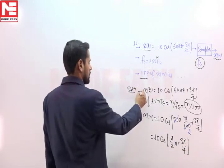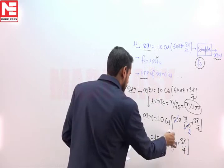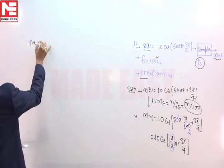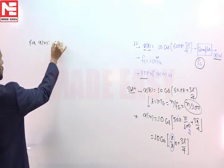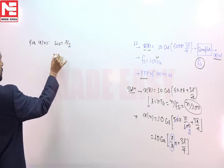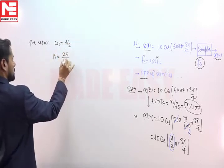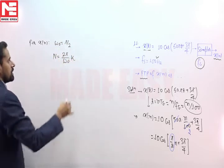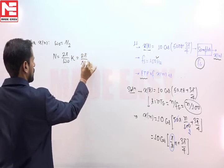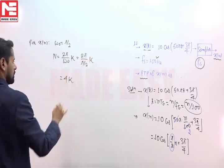We have obtained a periodic signal whose ω₀ is π/2. For x(n), the value of ω₀ is π/2. To obtain its fundamental time period, the formula will be 2π/(ω₀·k). So it will be equal to 2π/(π/2)·k, which equals 4k.